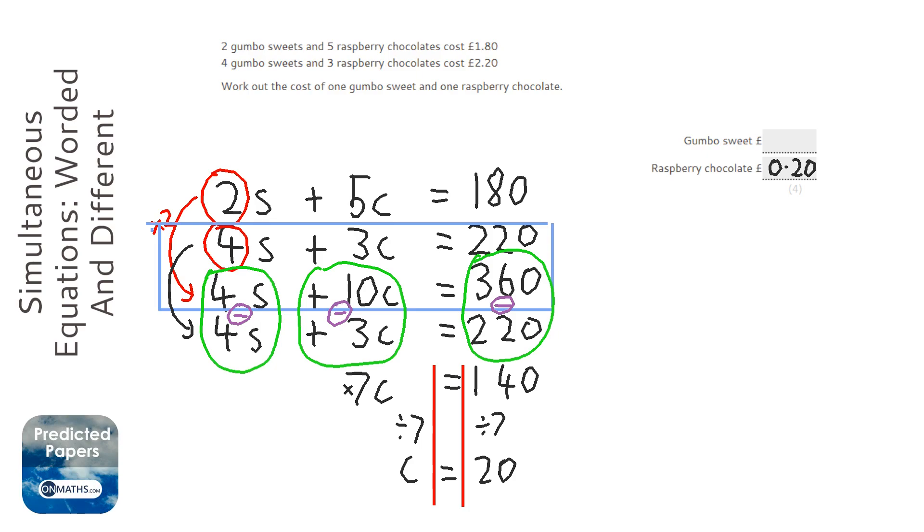But we need to work out what the price of the gumbo sweets is. So we pick one of the original equations—I like this one. We're going to rewrite this, but instead of C, we're going to substitute in 20. So it's going to be 2S—which we still don't know—plus 5 times 20, which is 100, equals 180.